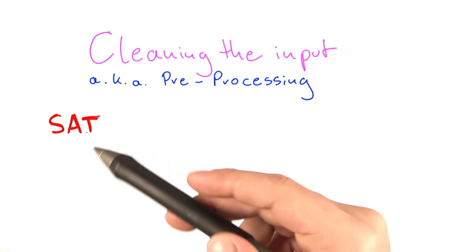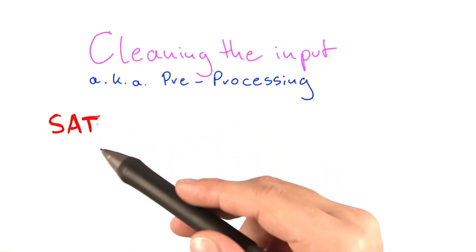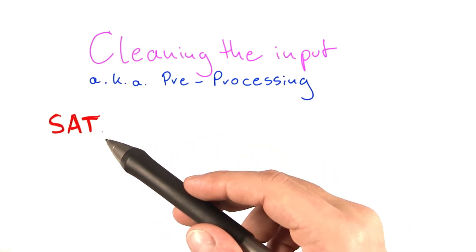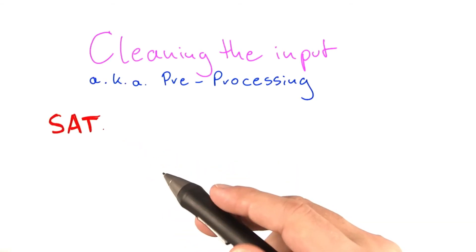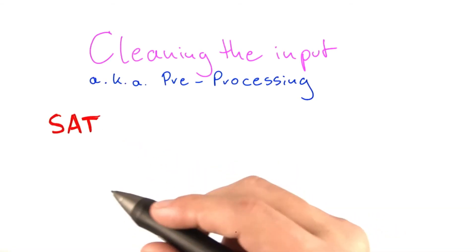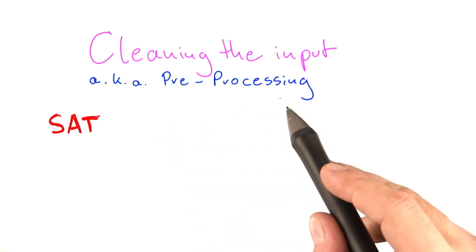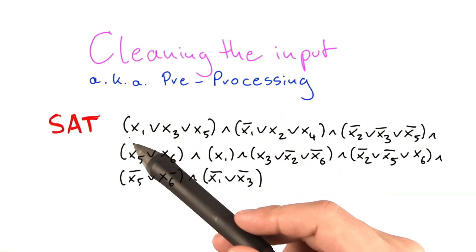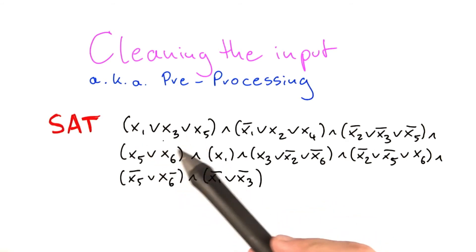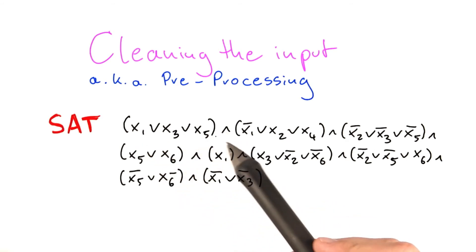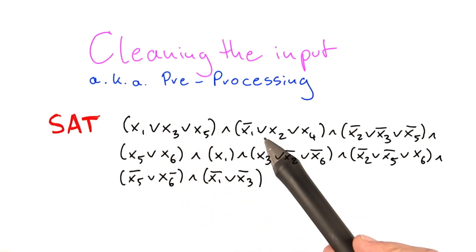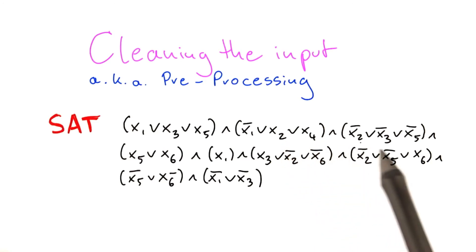So you'll remember that SAT was the problem of finding if a given Boolean formula has a satisfying assignment or not. And I'm now going to write down a Boolean formula for you, and then we're going to do a little quiz to make preprocessing more concrete. So the SAT formula is x1 or x3 or x5 and not x1 or x2 or x4 and so on and so on.